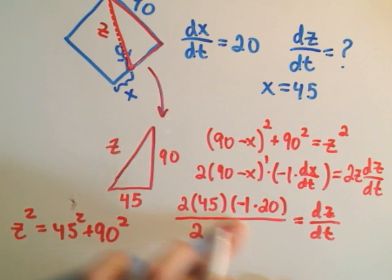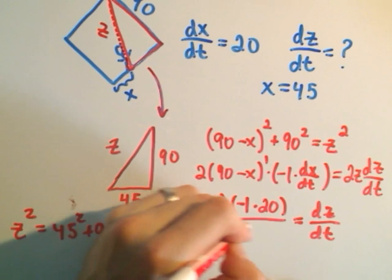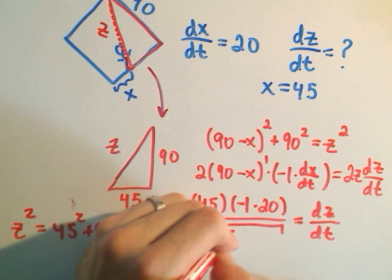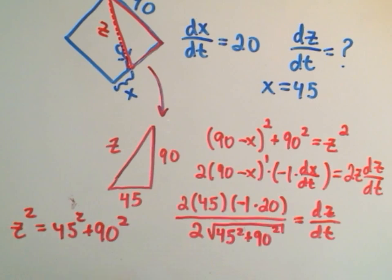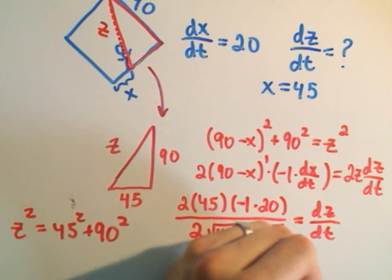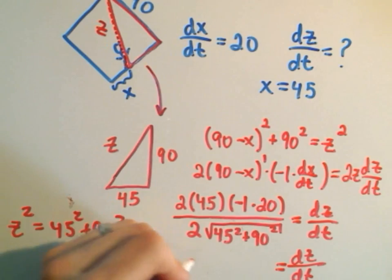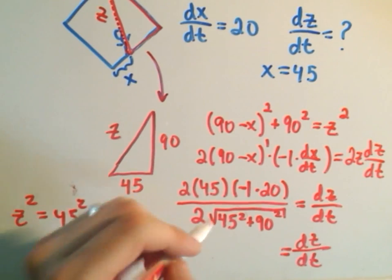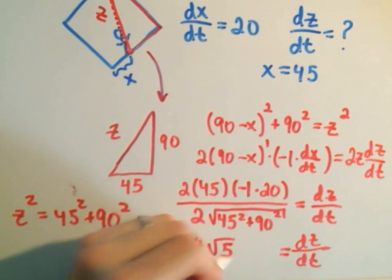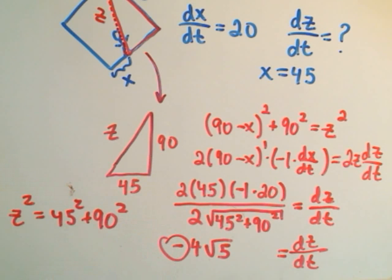So if we take the square root of that, that's what will go underneath the radical. 45 squared plus 90 squared. And after a bit of algebra, you can simplify this down and get that dz dt is going to be negative 4 root 5. And again, the negative just means that distance is decreasing with time.